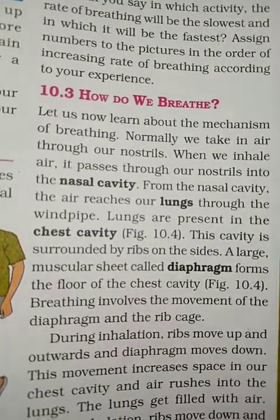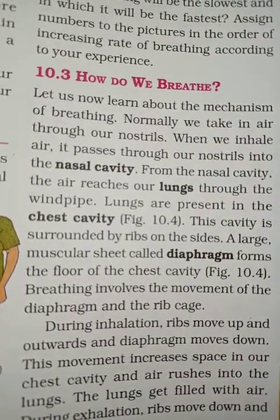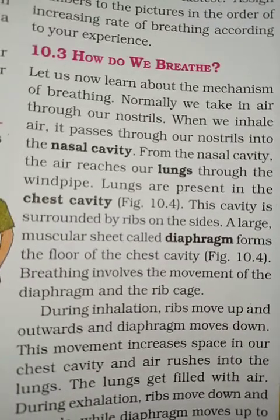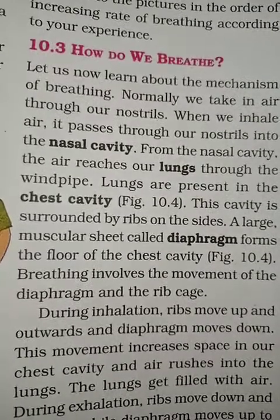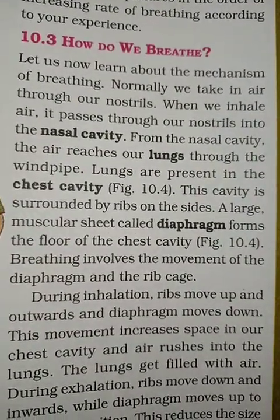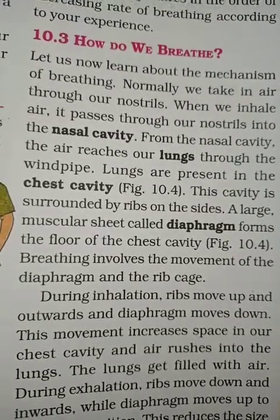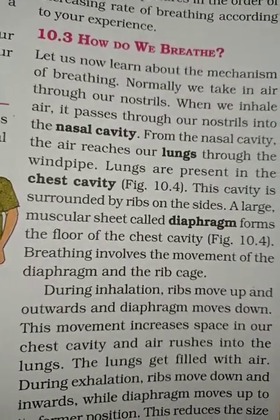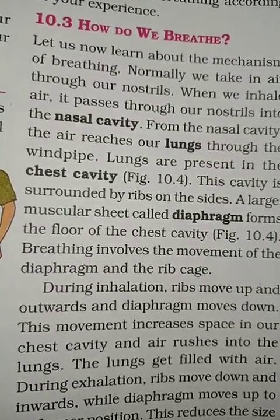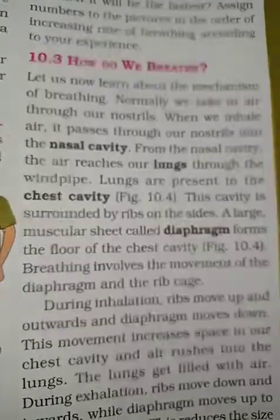How do we breathe? Normally we take in air through our nostrils. When we inhale, air passes through our nostrils into the nasal cavity. From the nasal cavity, the air reaches our lungs through the windpipe. The lungs are present in the chest cavity, which is surrounded by ribs on the sides. A large muscular sheet called the diaphragm forms the floor of the chest cavity. Breathing involves the movement of the diaphragm and the rib cage.